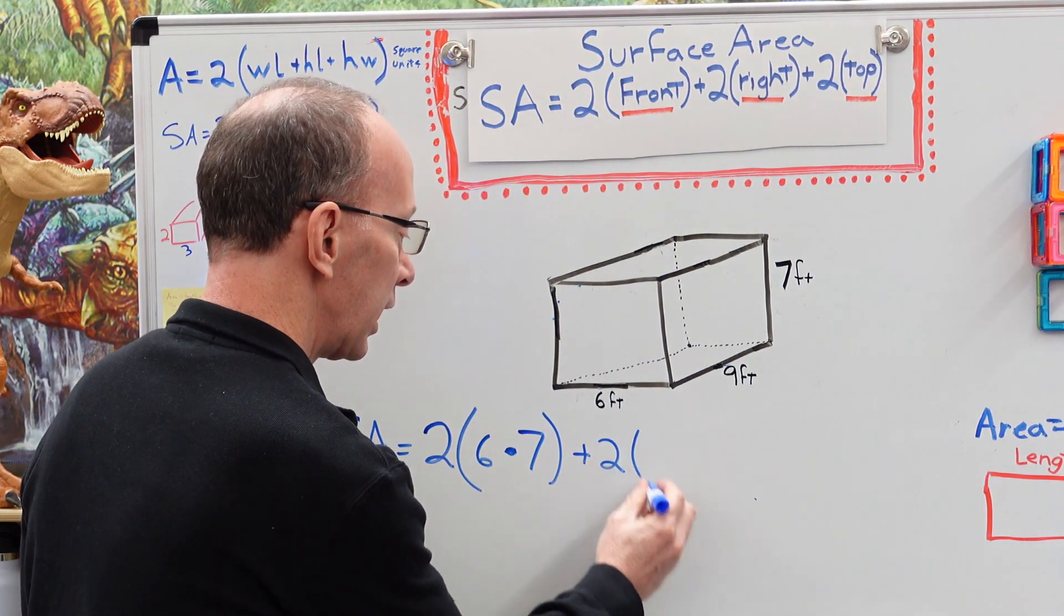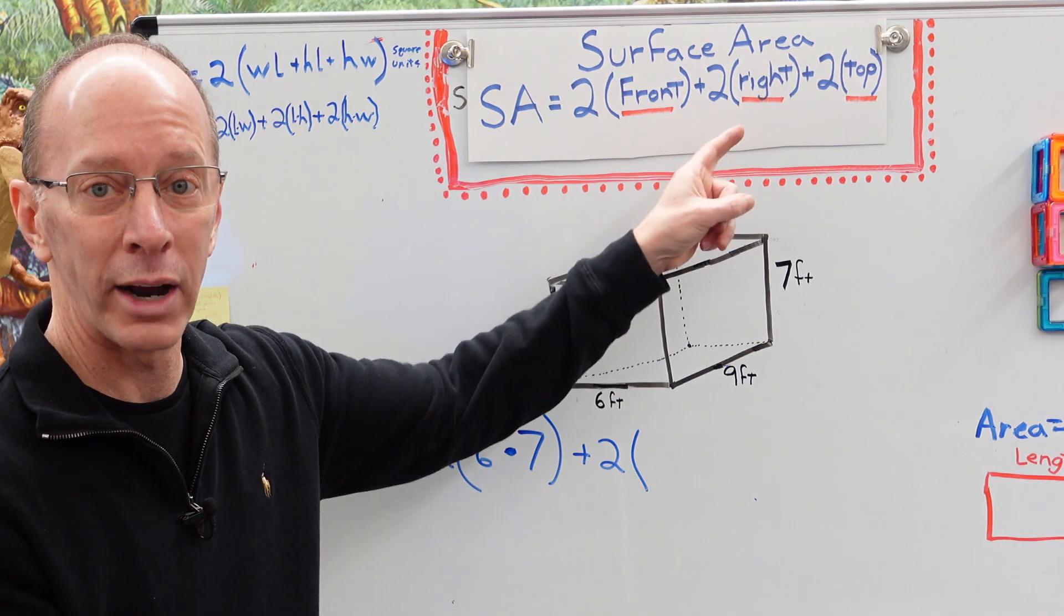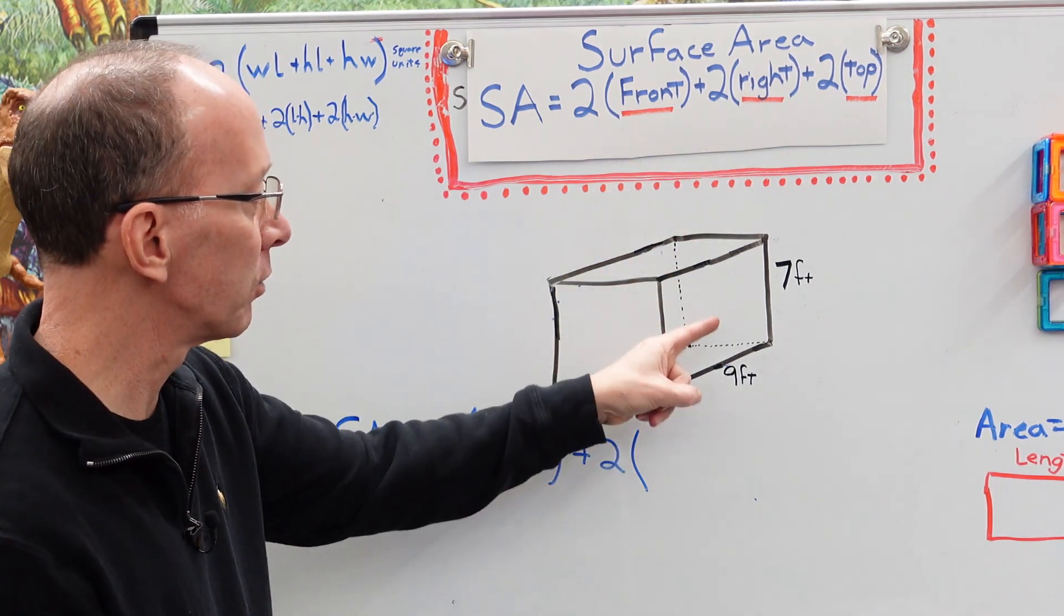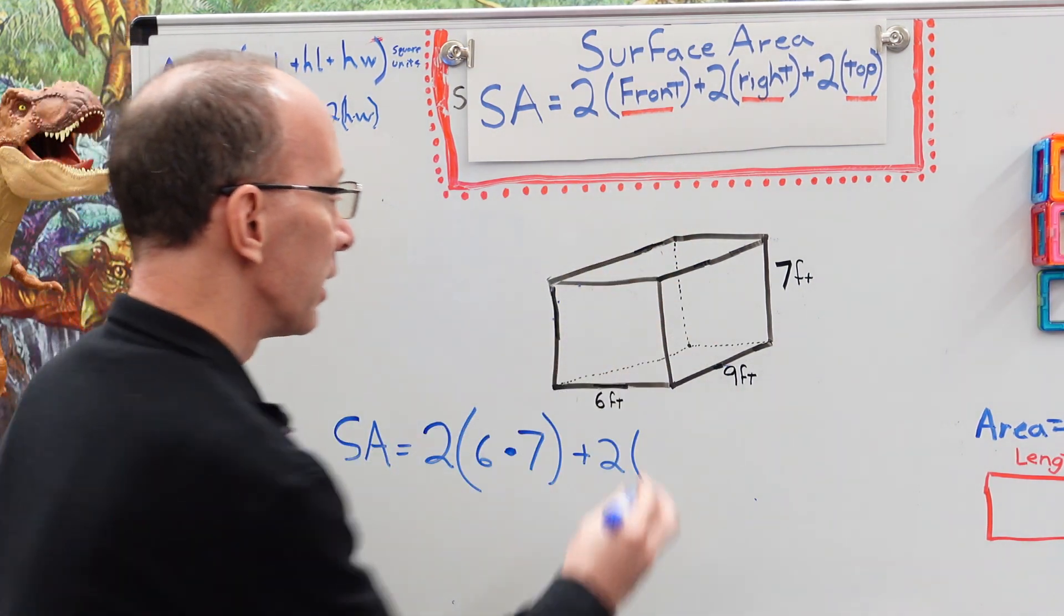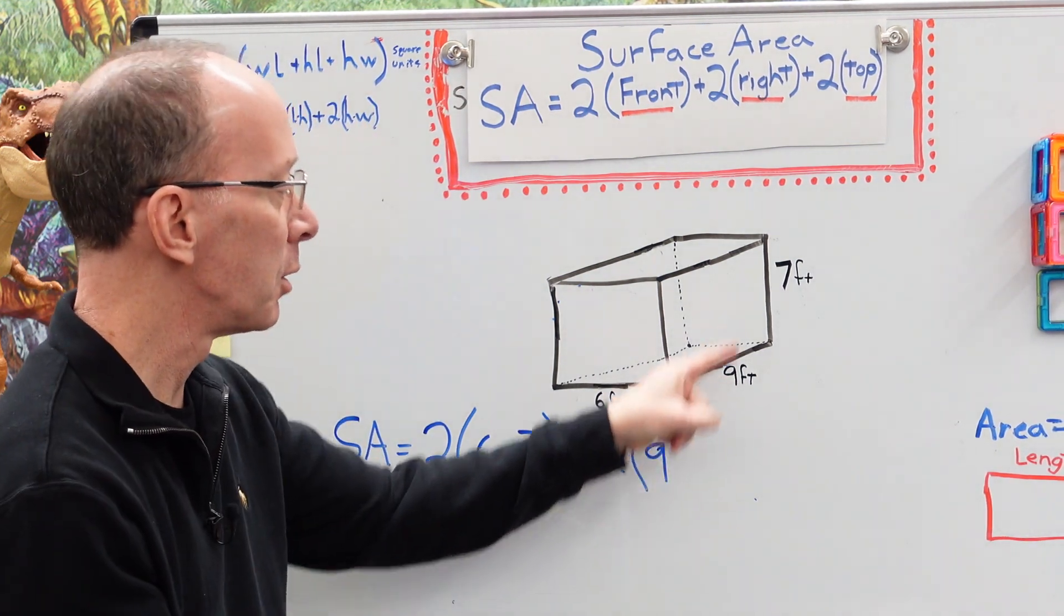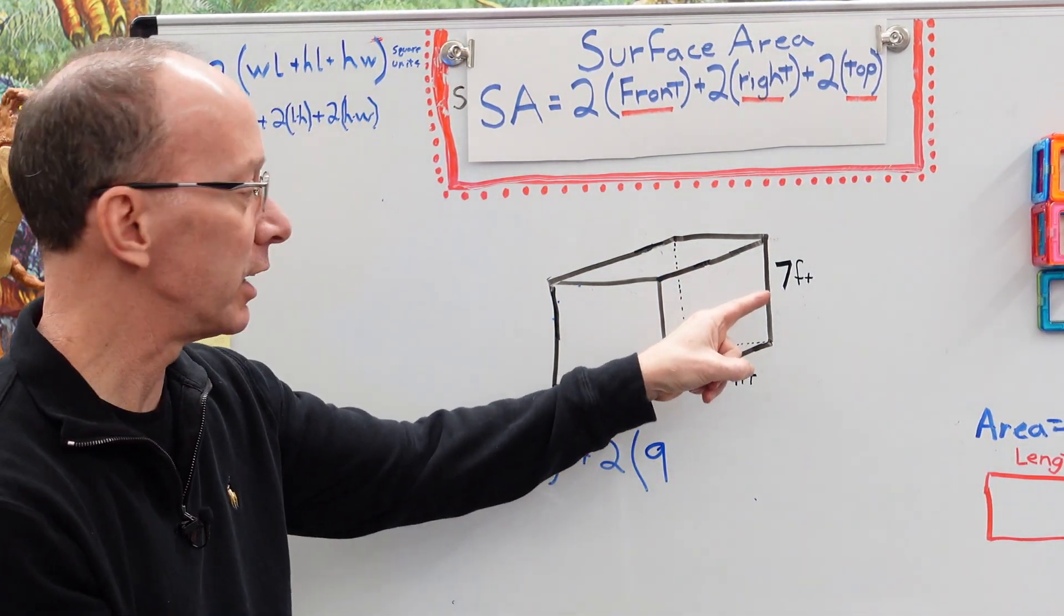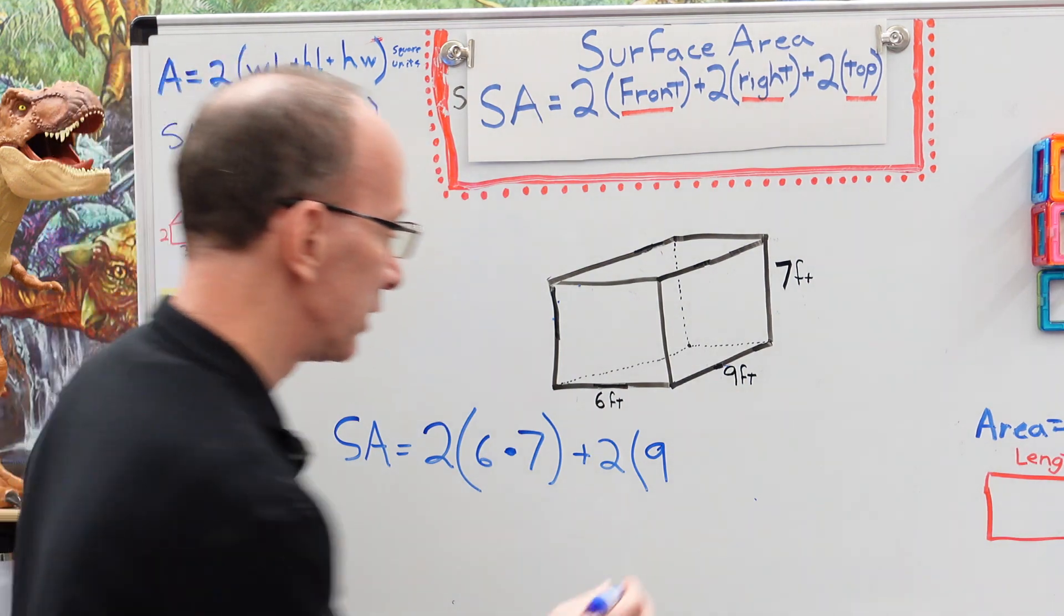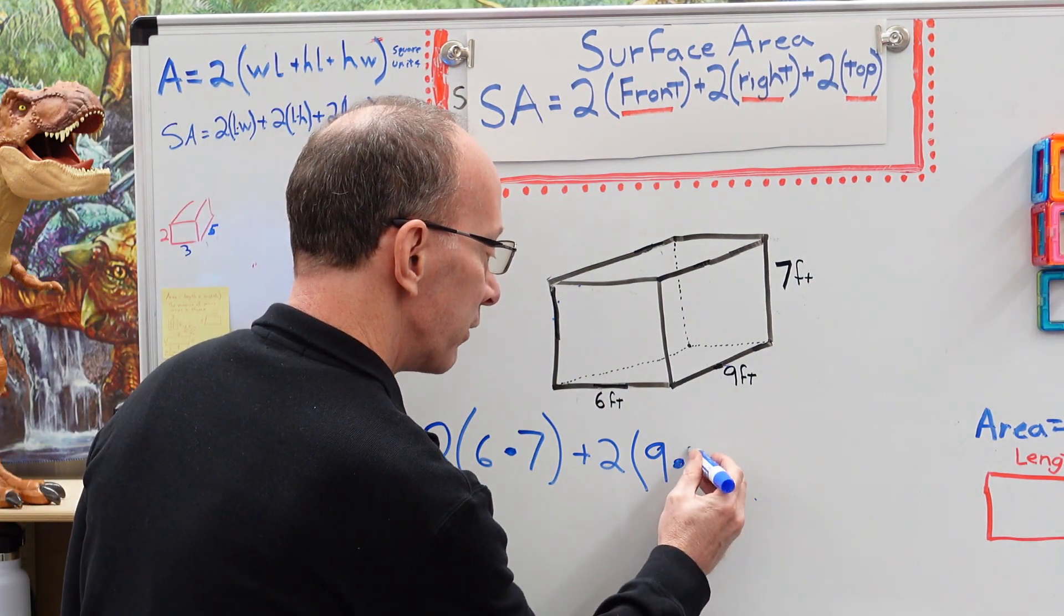All right, plus two times and now we're going to take a look at the right or the left and here's the right and that is nine right here nine feet by seven feet. So times seven feet. Okay, so we have nine times seven.